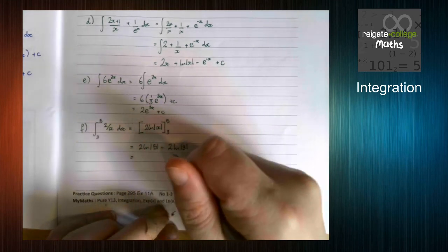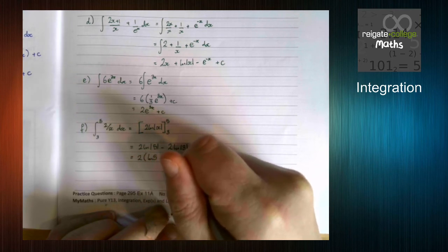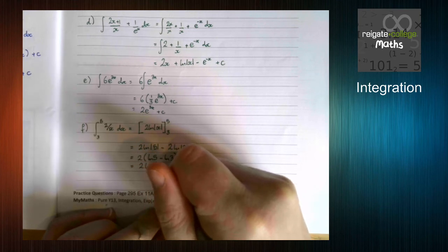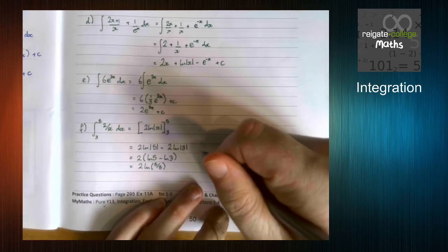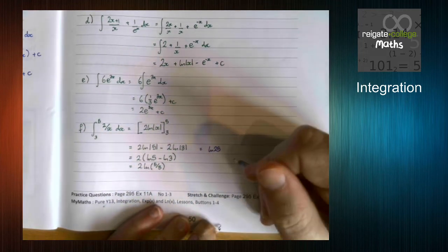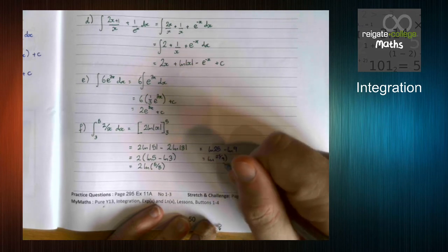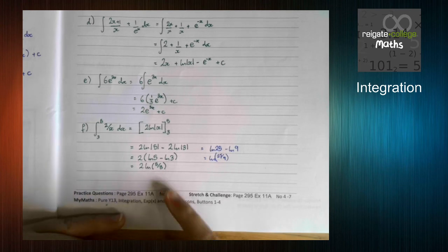So we get 2 times ln 5 minus ln 3, which is 2 ln 5 over 3. So, as I said, you may want to rearrange this in a different way. For instance, you may want to say, okay, this is ln 25 using the power law, minus ln 9. This is ln 25 over 9. That's fine. It's exactly the same. So, as long as your answer is exact and simplified, that's fine.